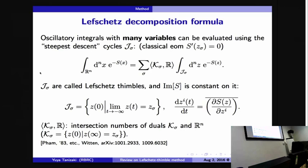In the case of one-dimensional integration, this is nothing but the steepest descent cycle. By constructing the Lefschetz thimble in this way, the n-dimensional oscillatory integration satisfies the same formula as in the one-dimensional case: it can be decomposed into a sum of steepest descent paths, with weights given by intersection numbers between the steepest descent cycle and the original integration cycle. This was developed in mathematics around the 1980s–90s and reviewed by Witten in 2010 in the context of complex Chern–Simons theory.